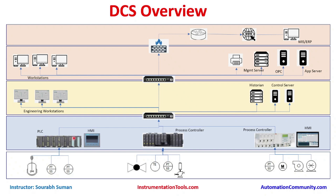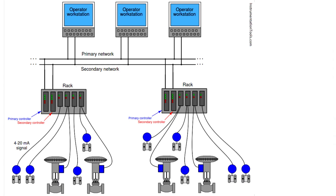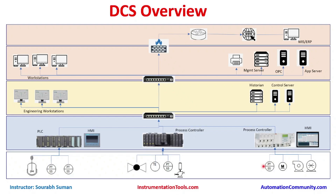In a DCS system, we have field-level instrumentation including pressure transmitters, temperature measuring instruments, level measuring instruments, and flow measuring instruments. Apart from measurement, there is also the command part — solenoid valves and motorized valves which receive commands from the DCS and process them to downstream equipment. This is the basic field level, or level zero.